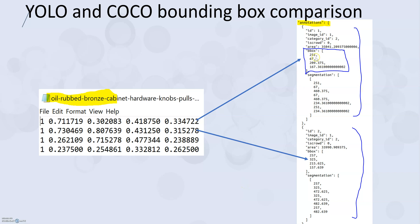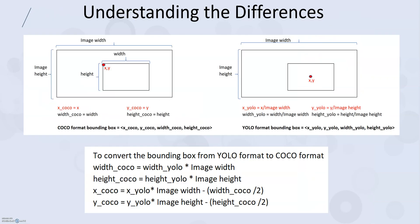The numbers look very different between the two formats — in YOLO they are fractions, while in COCO they are not necessarily less than one. So if you find a dataset in YOLO format but you need to use an object detection model that requires COCO format, how do you make this conversion? The answer is yes, it is quite possible — we just have to understand the difference between the COCO bounding box and the YOLO bounding box.